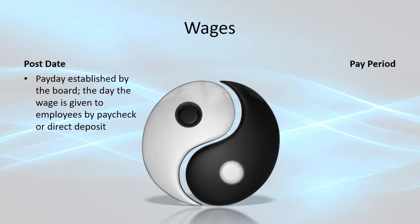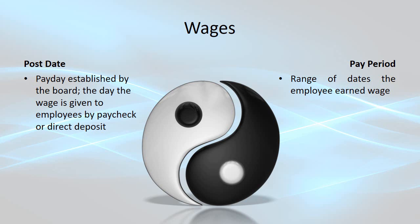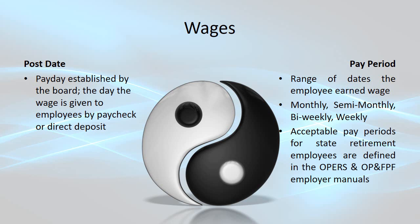The pay period of a wage represents a range of dates in which the employee earned the wage. For state retirement purposes, the pay period is an exact established range of dates — for example, monthly, semi-monthly, bi-weekly, or weekly. To understand how OPERS and OP&F expect you to use and report pay periods, please consult the OPERS or OP&F employer manuals.